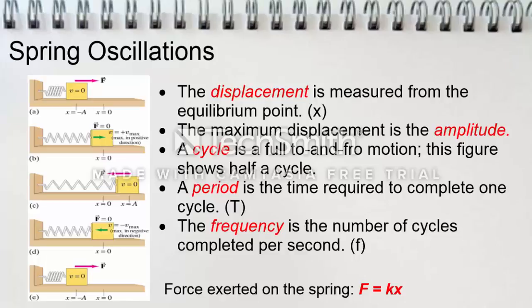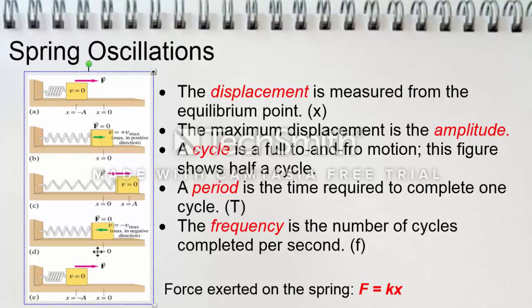Here we have just a few key terms. The displacement is measured from the equilibrium point and is often noted by the letter x. The maximum displacement is the amplitude. A cycle is a full to-and-fro motion, and this figure shows half of a cycle. A period is the time required to complete one cycle, often marked by a capital T. And the frequency is the number of cycles completed per second, often denoted by a lowercase f.